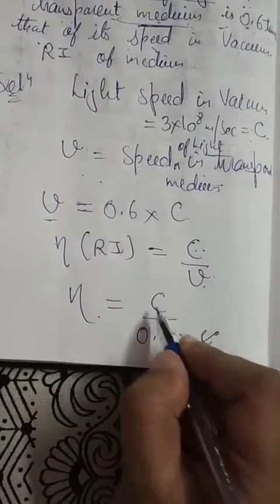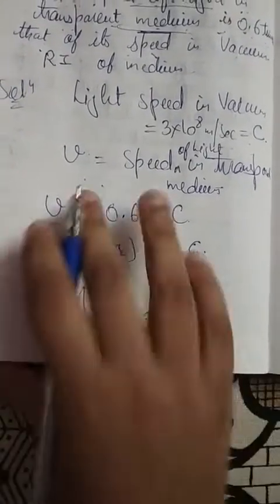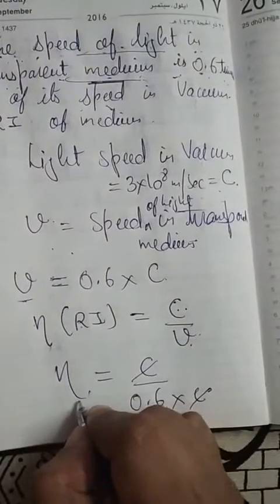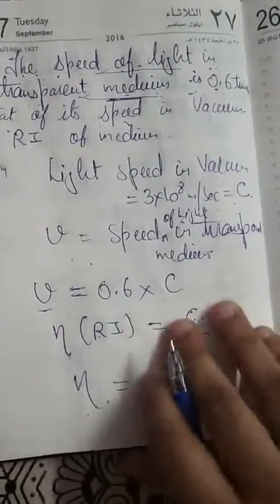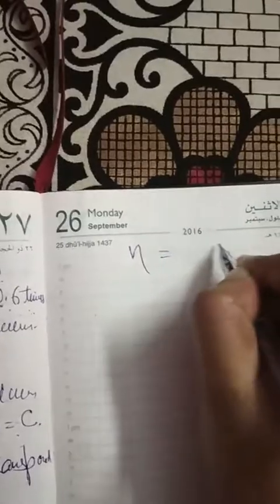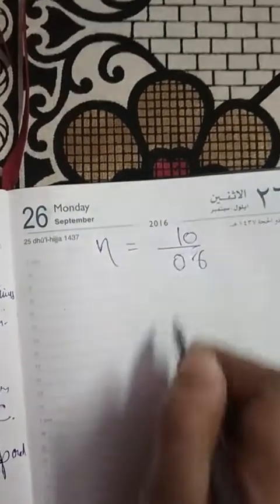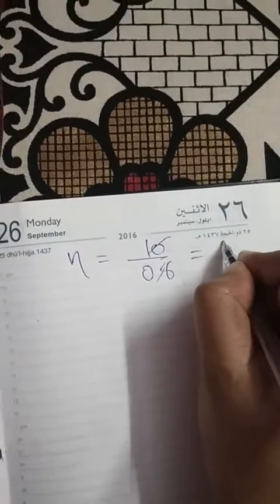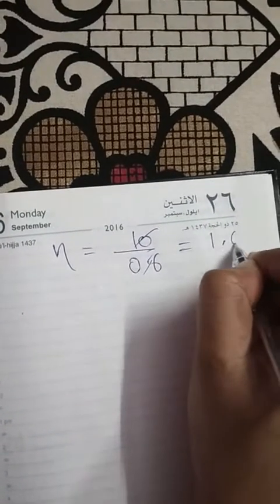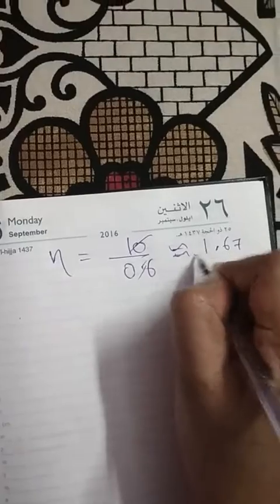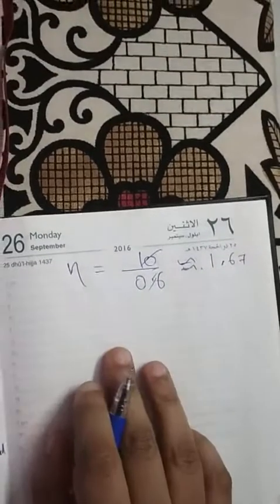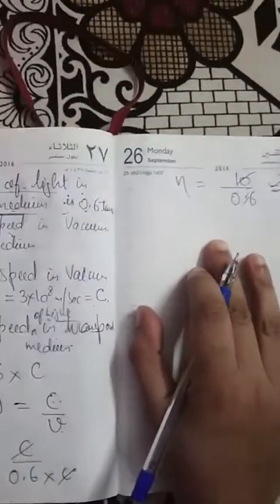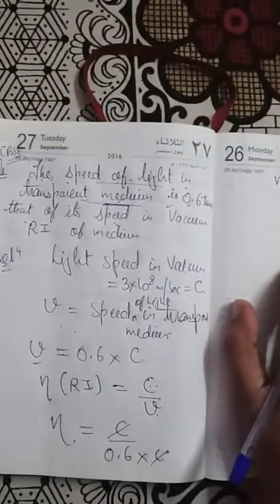Cancel out c from numerator and denominator, and you get the refractive index eta equals 1 divided by 0.6, which gives approximately 1.67. So this is the refractive index of the medium. Hope you liked the video — thank you so much for watching.